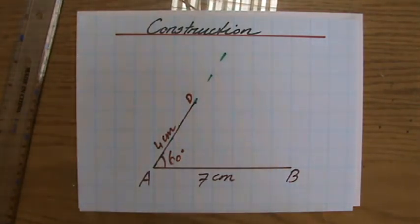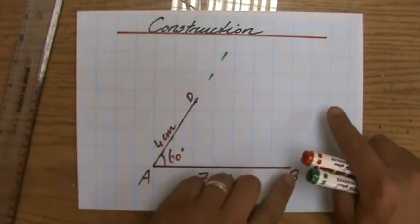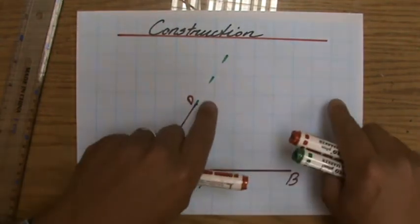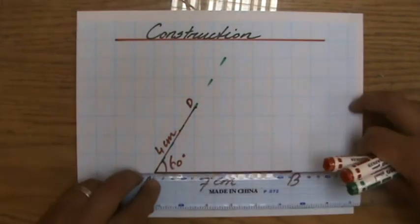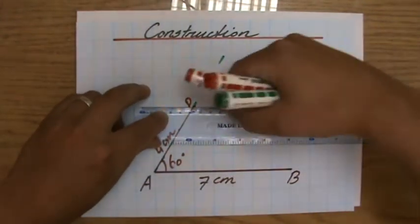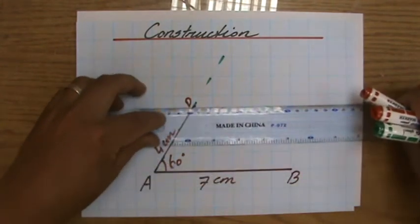Properties of a parallelogram you should be familiar with is that this line is parallel with that line, and this line is parallel with that one. So there are two things I can do now. I could draw a parallel line here, 7 centimeters, but as you can see, that is not very accurate. My ruler is already moving.